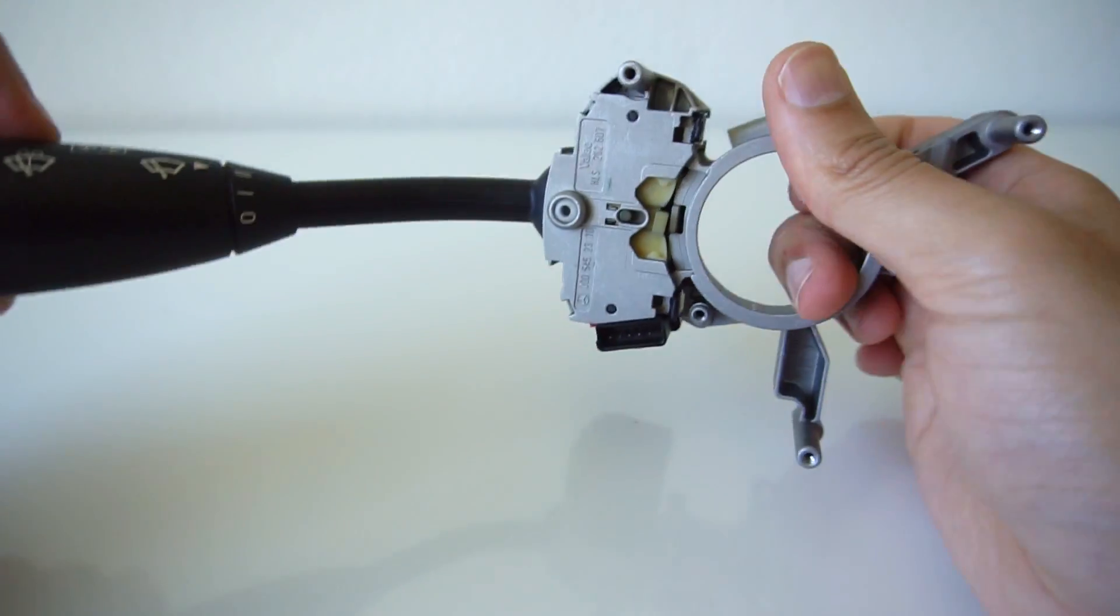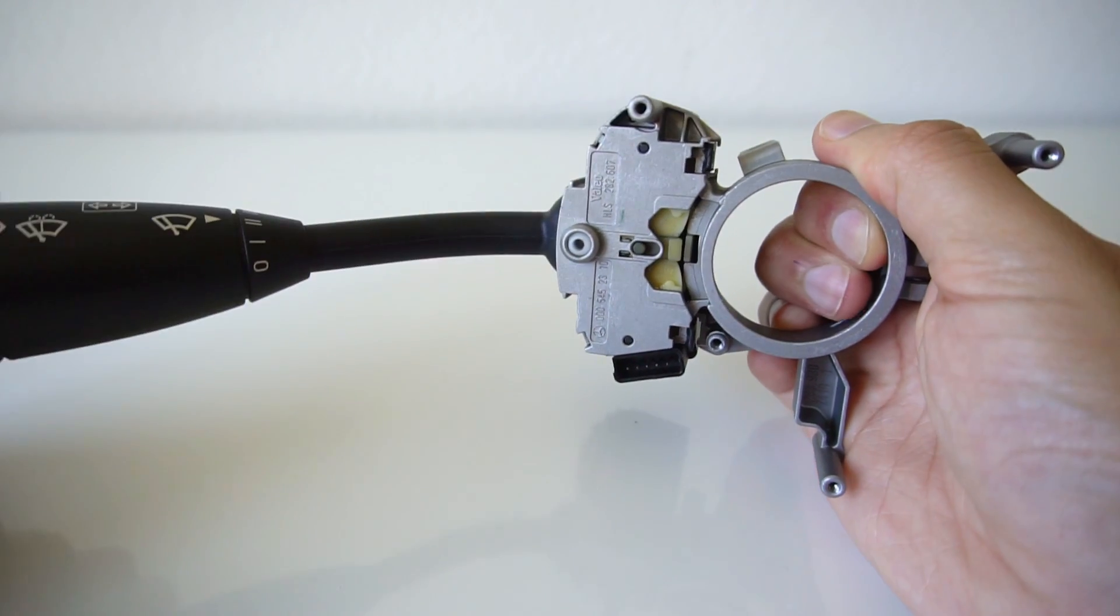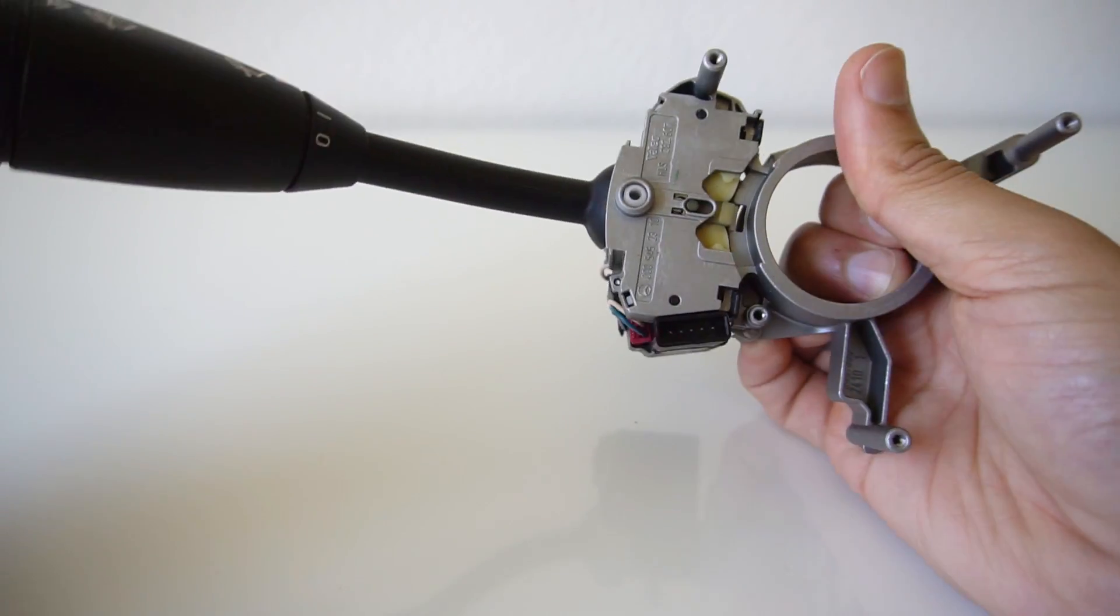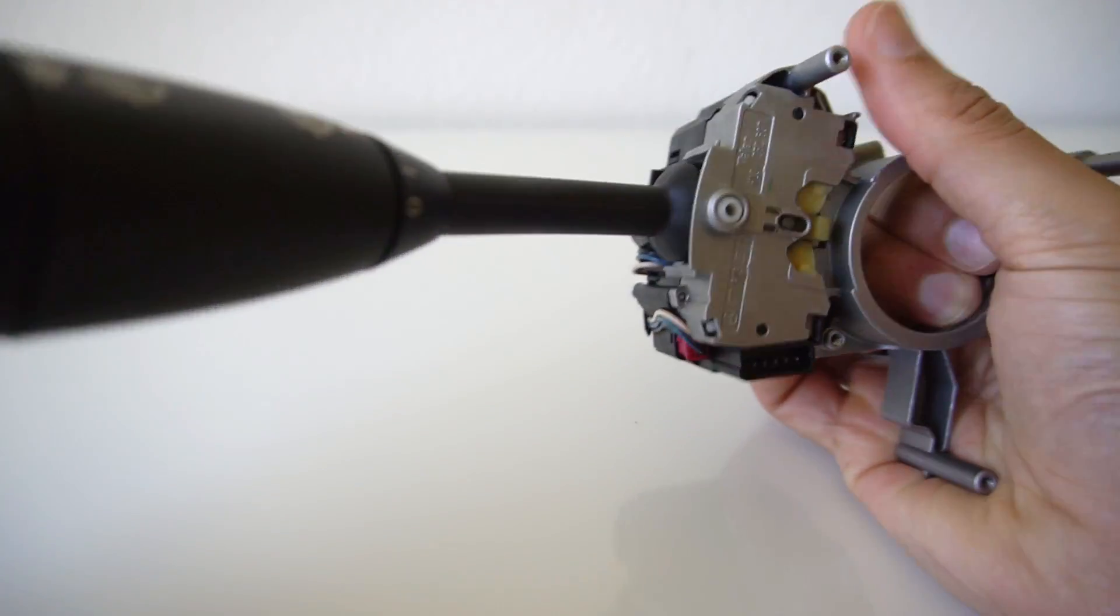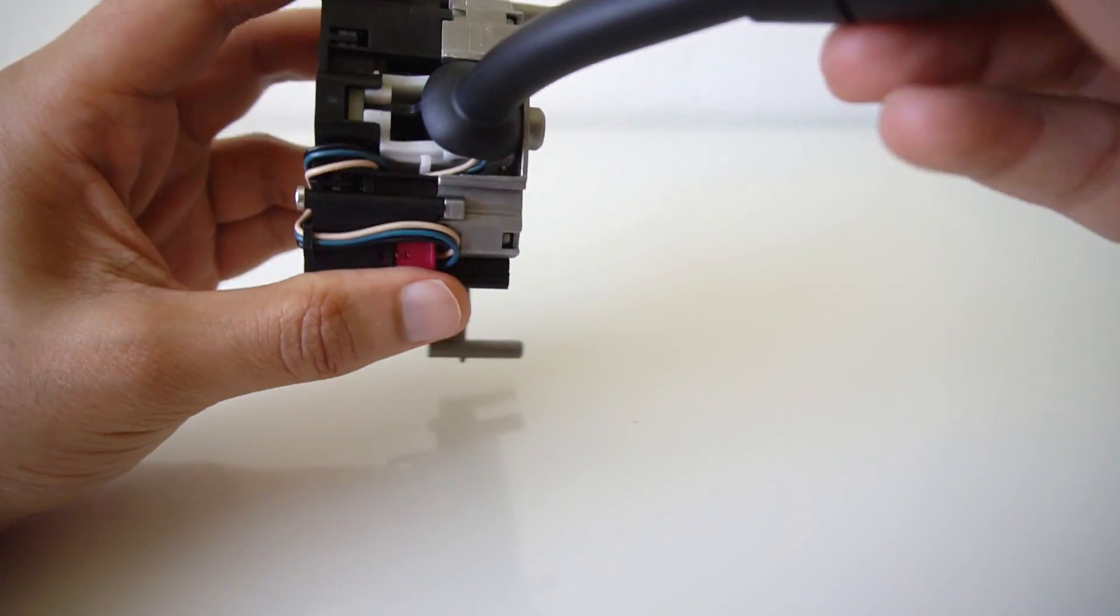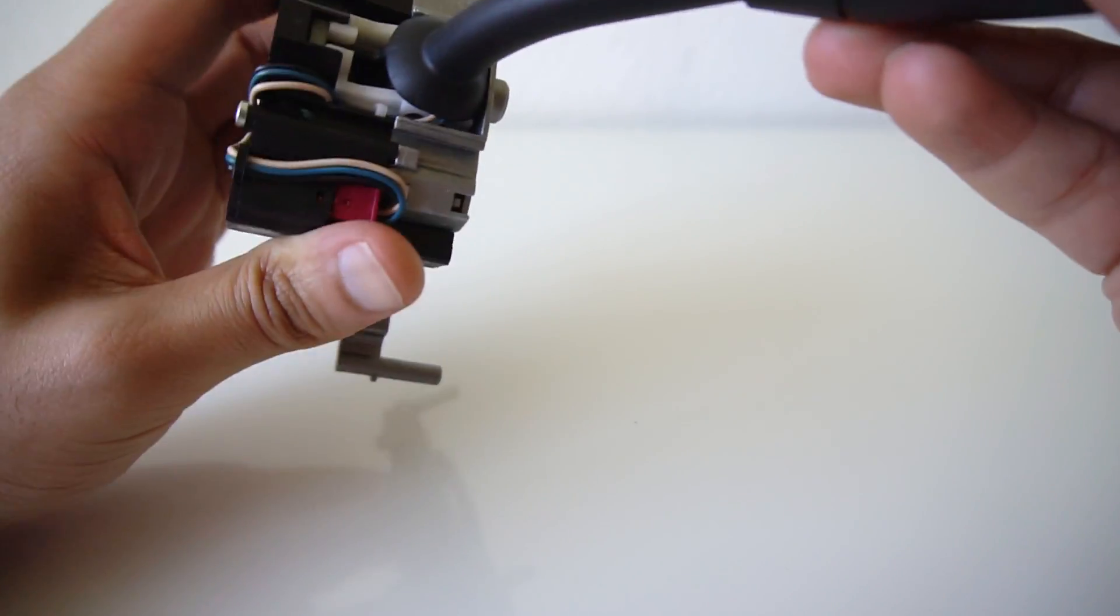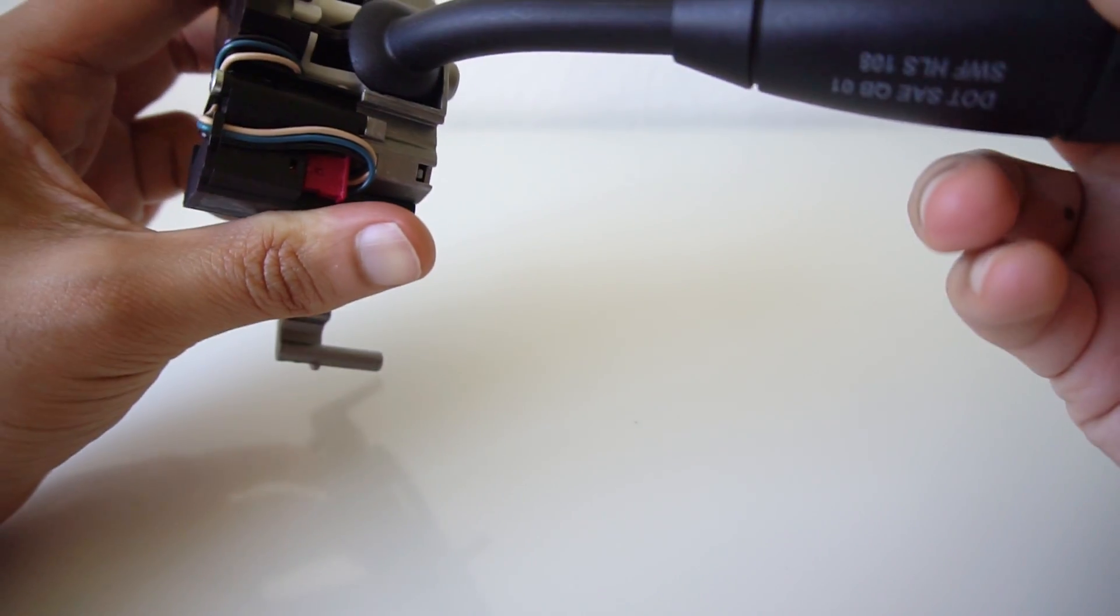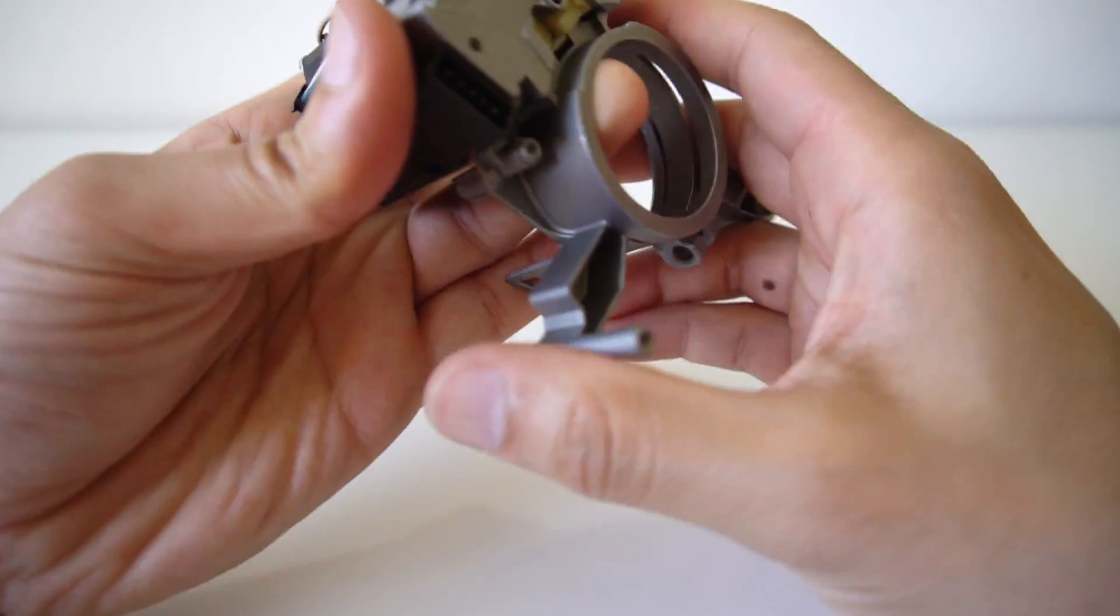Now that everything is back together let me do a quick test. And it's still broken. Well I looked through the entire stock, fixed what I could or whatever looked broken but it still doesn't stay clicked. The only thing left I can think of is the plastic is warped out of its original position and the pressure that holds it clicked in is no longer there.